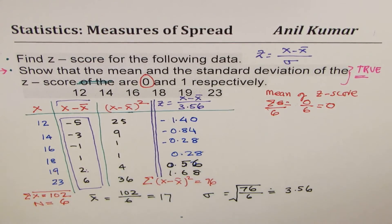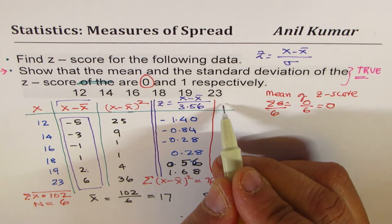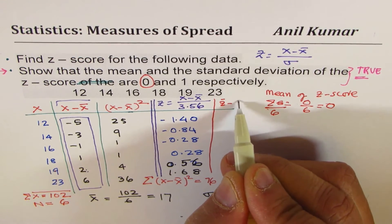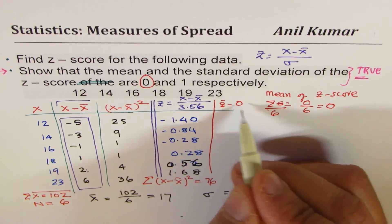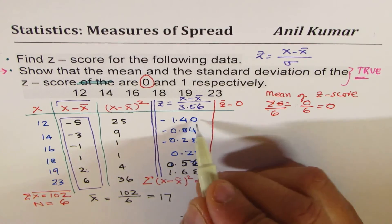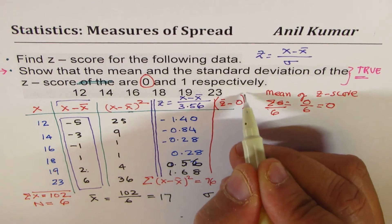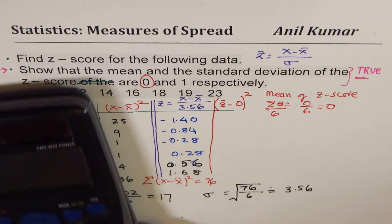Now since the mean is 0, the next column will be same as this. Since we want to write z-score minus the mean, which is 0. So that means we get the same values. So we could now just straightaway square it and write to find standard deviation.